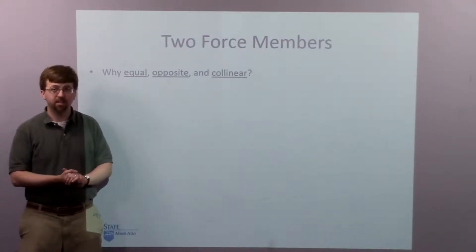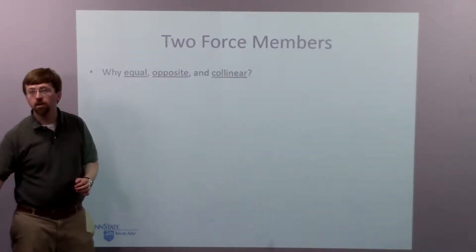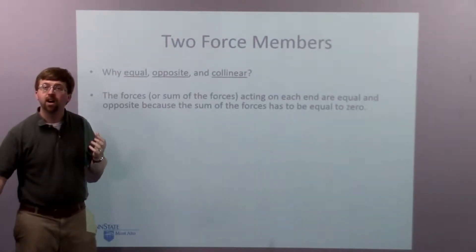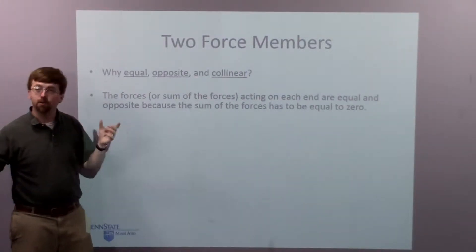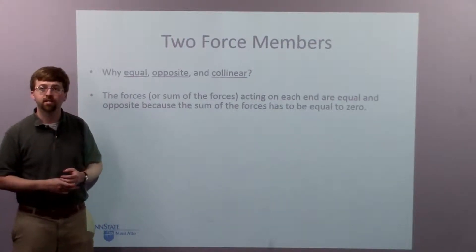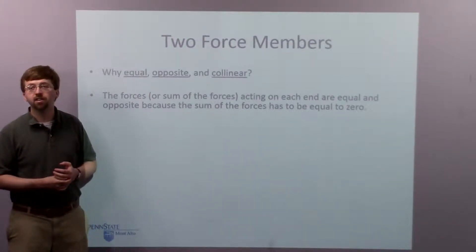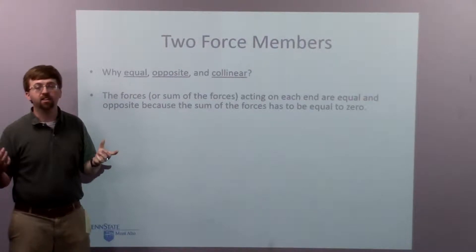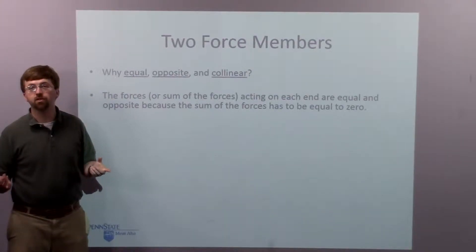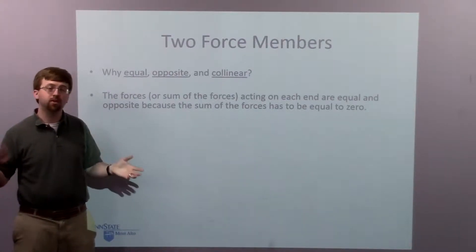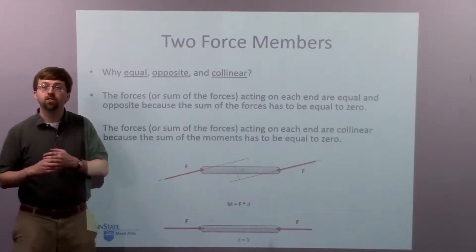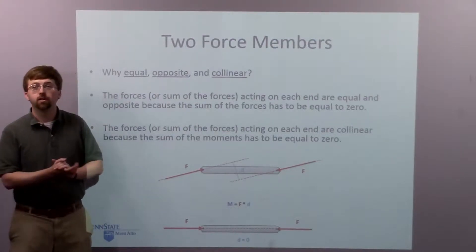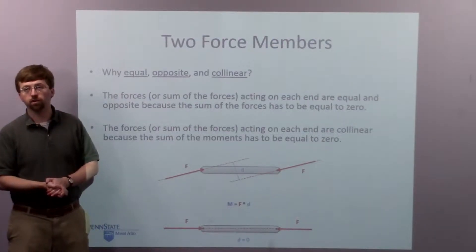Why do these forces need to be equal, opposite, and collinear? Because, basically, they are in equilibrium. The two forces, the sum of the forces at those two points has to be equal to zero. Because the body needs to be in equilibrium, so the sum of the forces need to be zero. The only way to do that with two forces is to have them be equal and opposite. The forces need to be collinear to make the sum of the moments equal to zero.